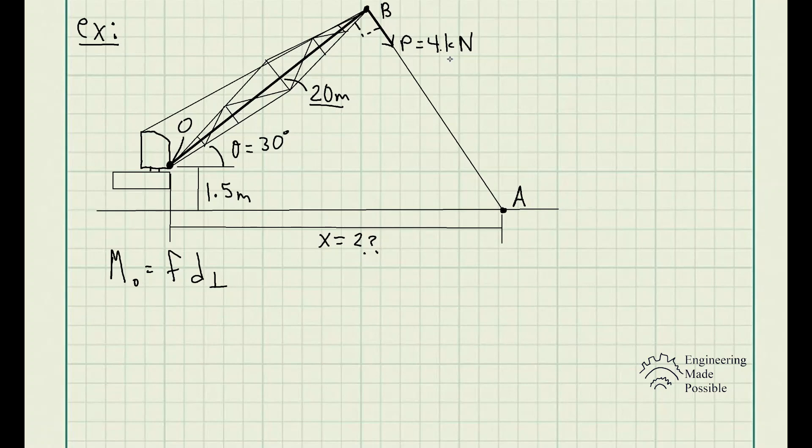In this case, we want the full 4 kN to produce a moment, so it needs to be perpendicular to this 20 meters, which is the distance that's perpendicular from P to O.